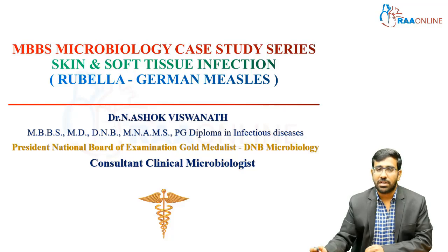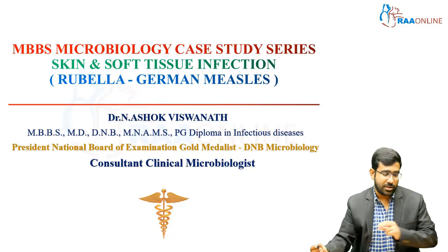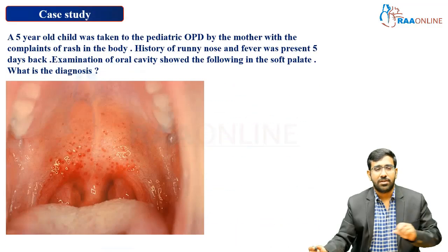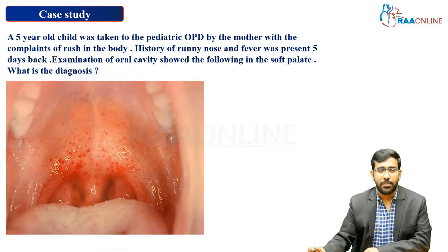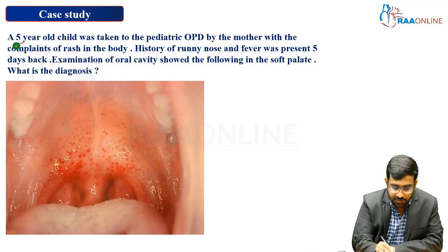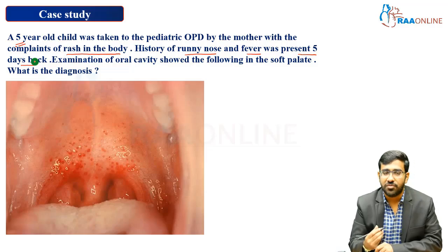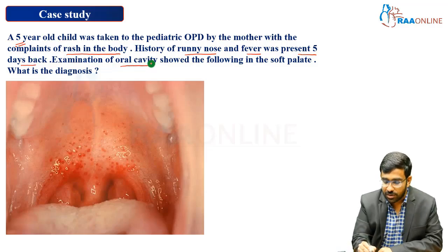I will show you a particular case along with a picture related to the case, followed by a set of questions to answer one by one. The case involves a five-year-old child brought to the pediatric outpatient department by the mother with a complaint of rash on the body. There is also a history of runny nose and fever five days back, representing a prodrome stage. Examination of the oral cavity showed the following findings on the soft palate.